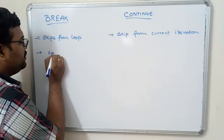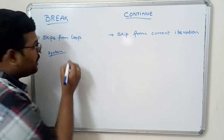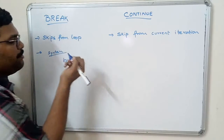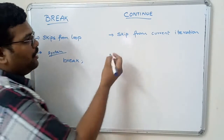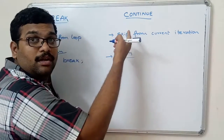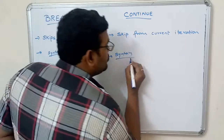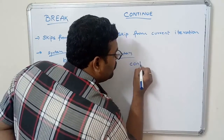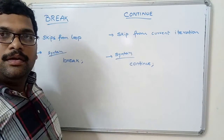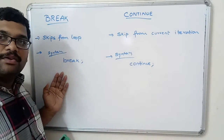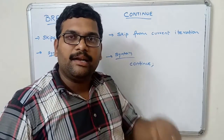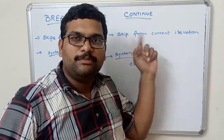The syntax of break: as it is a keyword, just write the keyword break in small letters and place the semicolon. The syntax of continue: similarly, continue is a keyword written in lowercase letters, followed by a semicolon. Break means the control comes out from the loop. Continue means the control will come out from the current iteration in which the continue has been written.